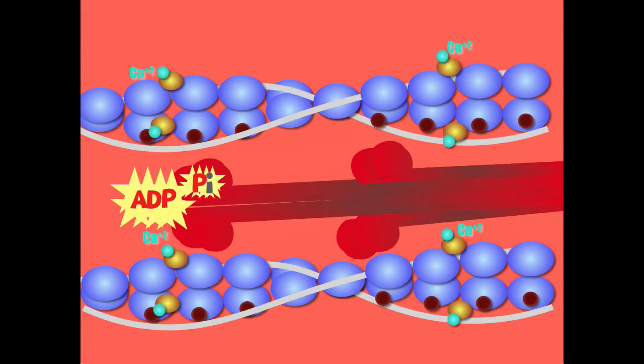Recall from the previous video that you have calcium ions attached to the troponin molecule, moving the tropomyosin, and the active sites are now revealed and ready for the myosin head to bind to it.